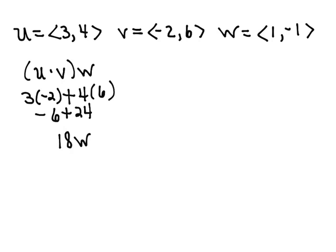And so we're wanting to find 18 times vector W. 18 is a scalar. So when we multiply that times vector W in component form, we end up with the vector 18, negative 18.